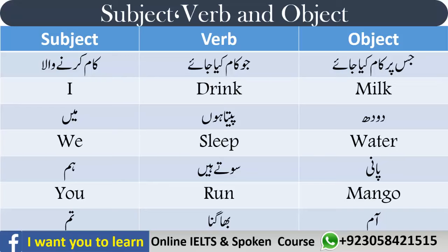Object وہ ہوتا ہے جس پر آپ کام کر رہے ہوتے ہیں۔ آپ کا sentence کبھی بھی صرف Subject اور Verb سے complete نہیں ہوگا — اگر آپ Object mention نہیں کریں گے تو sentence غلط ہوگا۔ مثلاً اگر آپ کہیں 'میں پیتا ہوں' تو آگے والے کو سمجھ نہیں آئے گا — کیا چیز پیتے ہیں؟ جس چیز پر کام ہو رہا ہو، اسے ہم Object کہتے ہیں۔